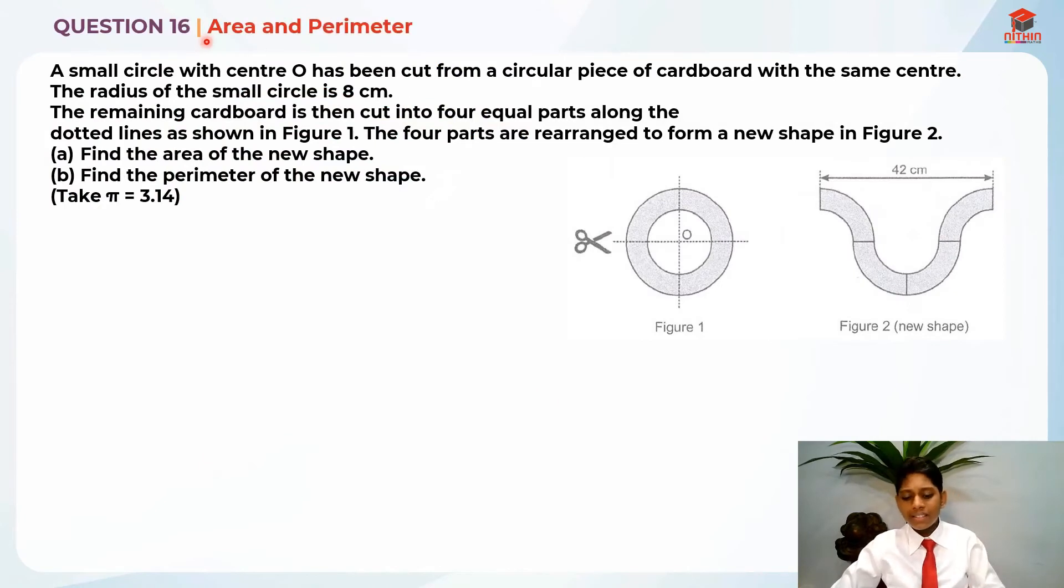This is question 16 and it is testing us on area and perimeter and also slightly on visual thinking. So a small circle with center O has been cut from circular piece of cardboard with the same center.